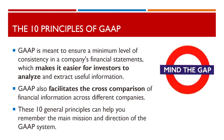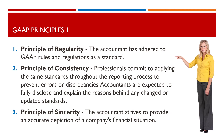These ten general principles can help you remember the main mission and direction of the GAAP system. The first is the principle of regularity, which means that the accountant has adhered to GAAP rules and regulations as a standard. Next, the principle of consistency, where professionals commit to applying the same standards throughout the reporting process to prevent errors or discrepancies. Accountants are expected to fully disclose and explain the reasons behind any changed or updated standards.